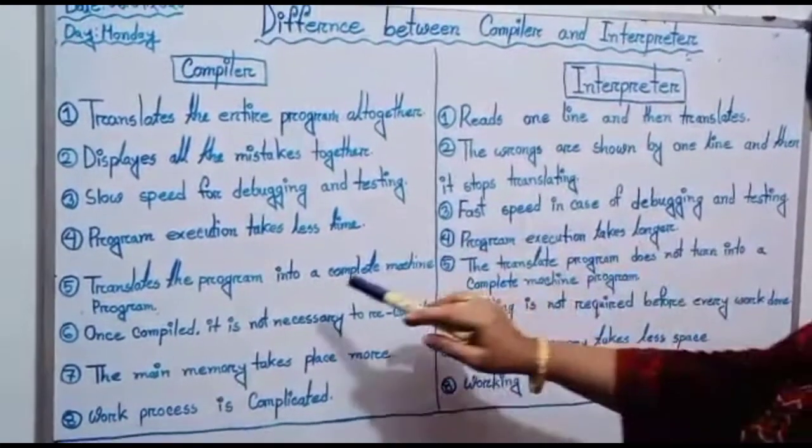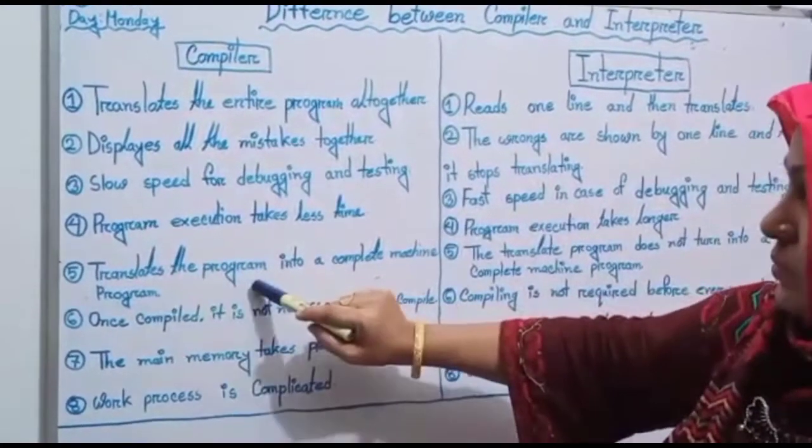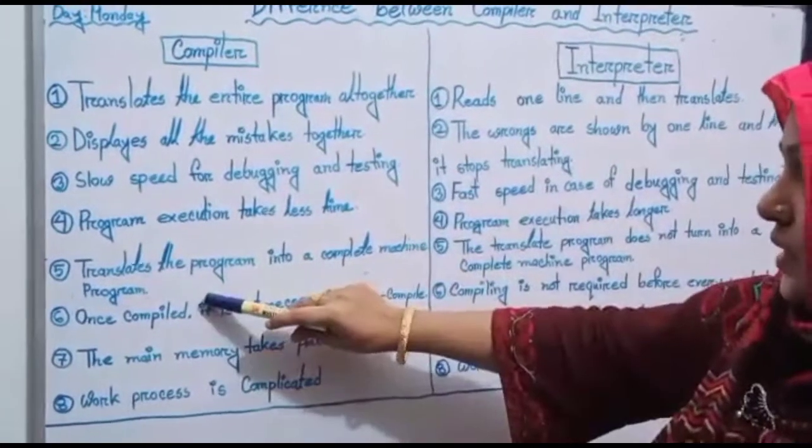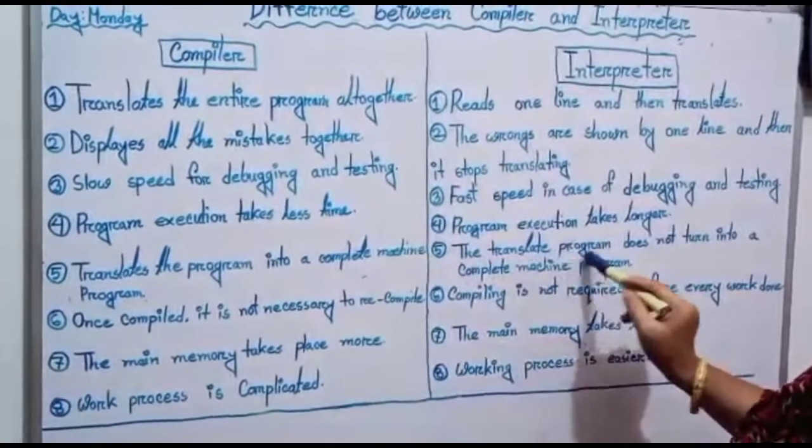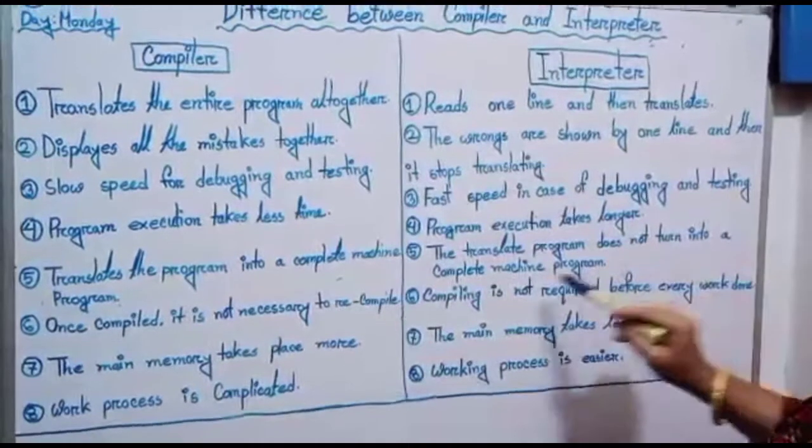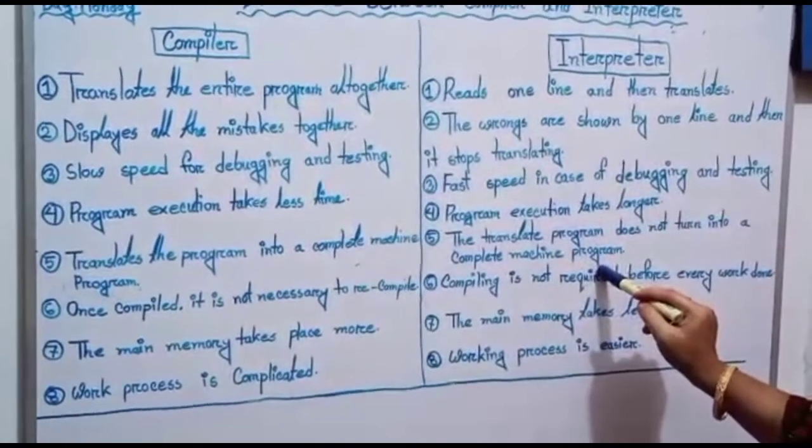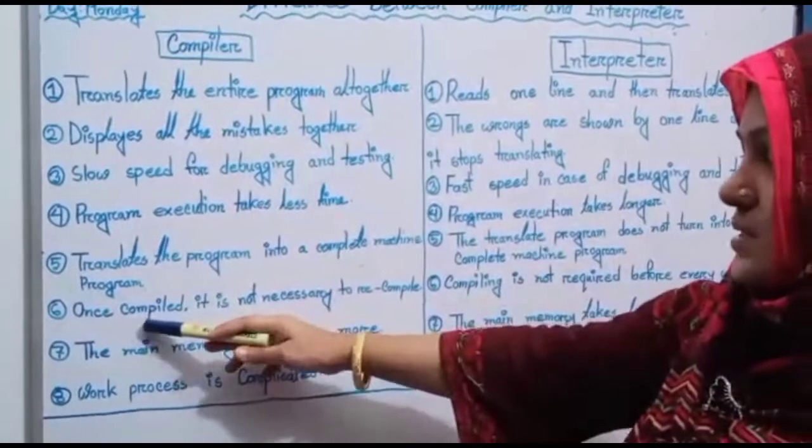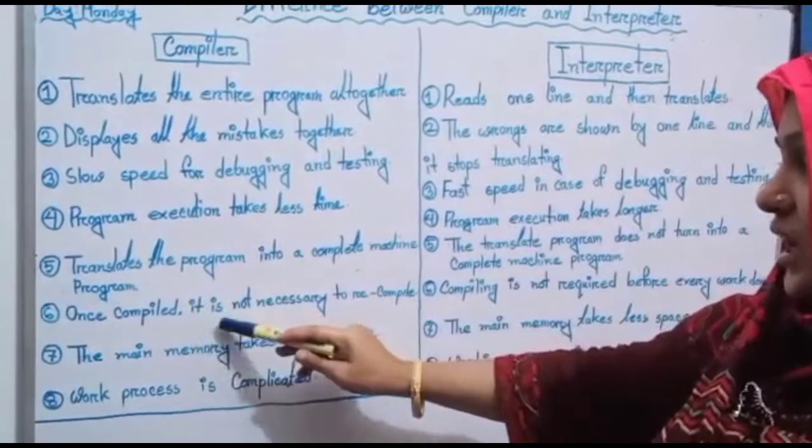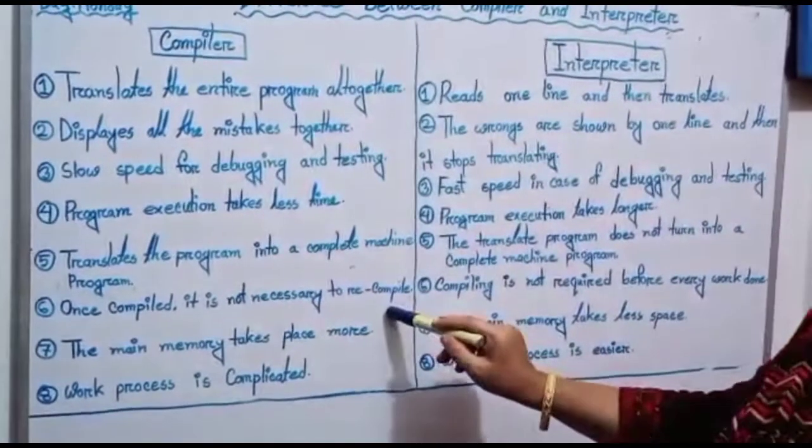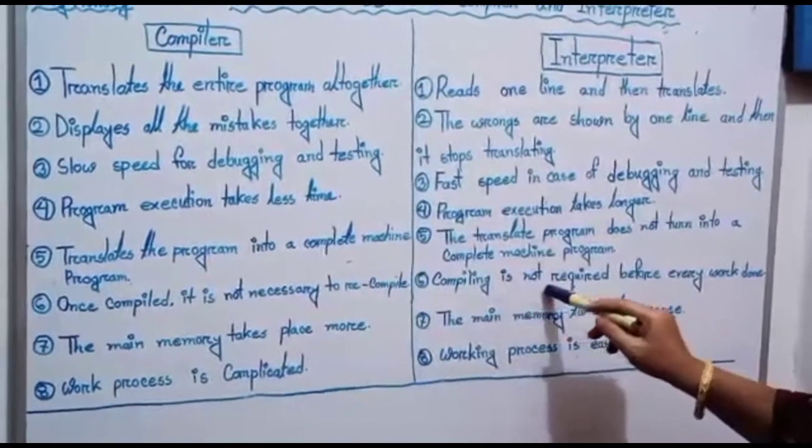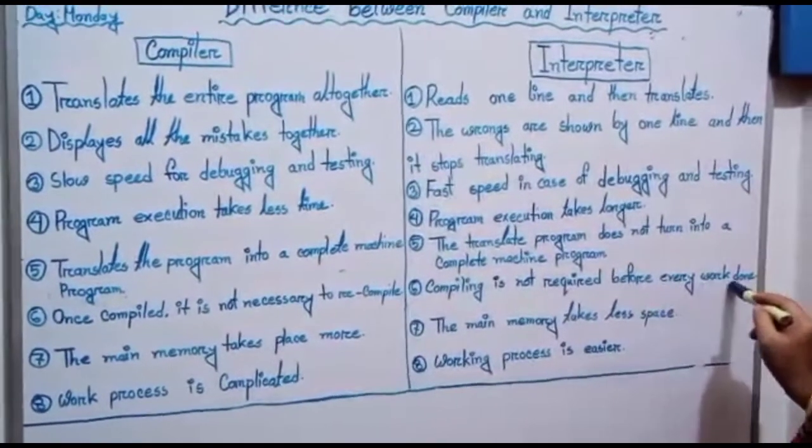Number five: compiler translates the program into a complete machine program, and interpreter doesn't turn into a complete machine program. Number six: once completely compiled, it is not necessary to recompile; compiling is not required before every work done with compiler.